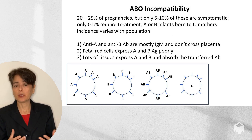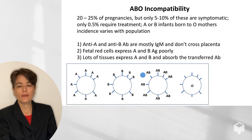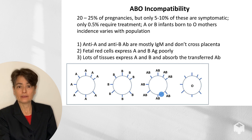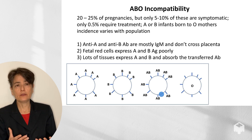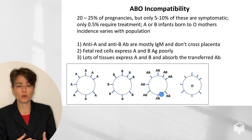There are four blood types: A, B, AB, and O. Type A individuals make the A protein; type B make the B protein; AB individuals make both — this is codominant. Type O individuals make neither protein, which is why O is a universal donor and AB is a universal recipient. ABO incompatibility occurs in about 20 to 25% of pregnancies, but only about 5 to 10% of those are symptomatic, and symptoms tend to be mild. Only about 0.5% will require treatment. The typical scenario is an A or B infant born to a type-O mother. The incidence varies by population due to different distributions of blood types across genetic ancestries.